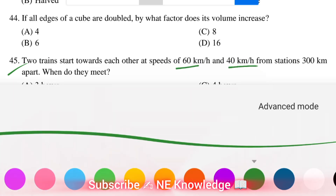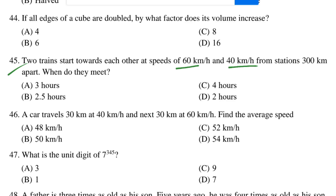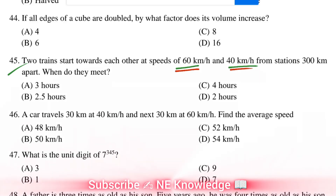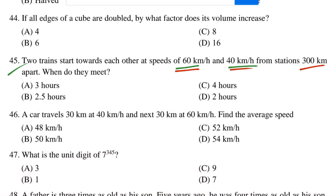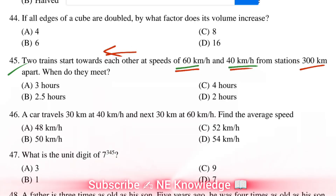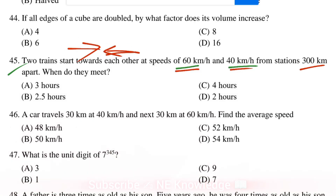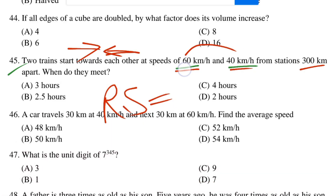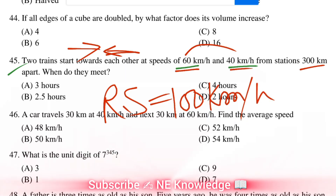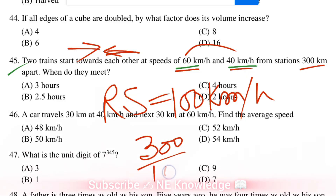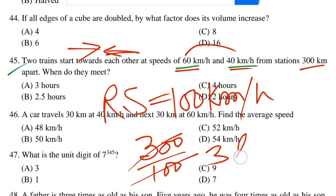Question 45: Two trains start towards each other at speeds of 60 km per hour and 40 km per hour from stations 300 km apart. The relative speed is 60 plus 40 equals 100 km per hour. Total distance is 300 km, so time equals 300 divided by 100 equals 3 hours. Answer is option A.